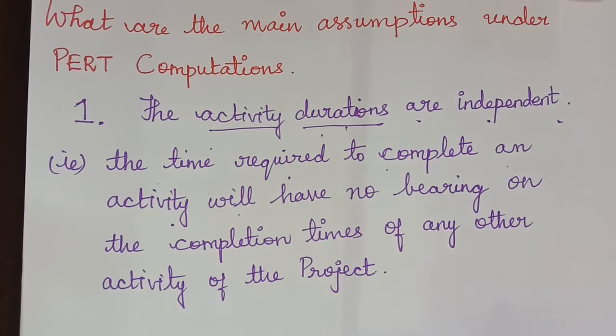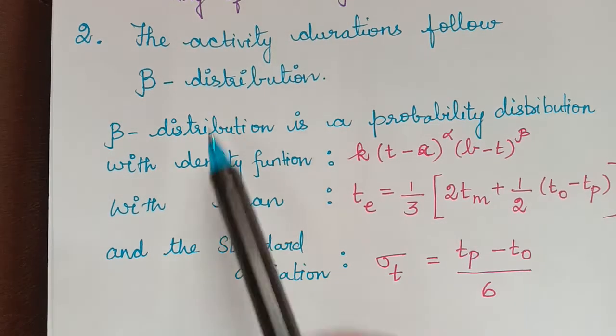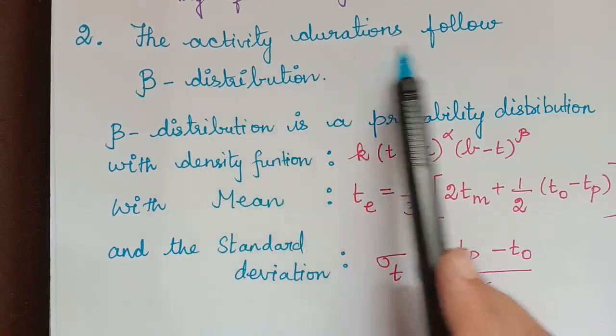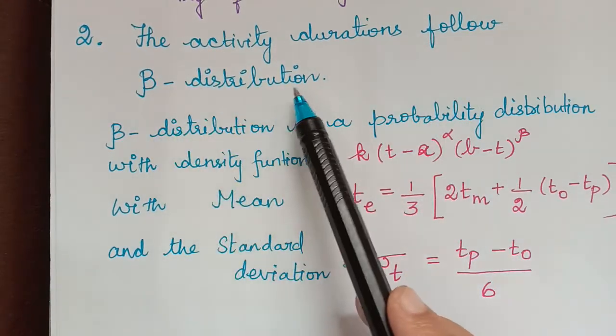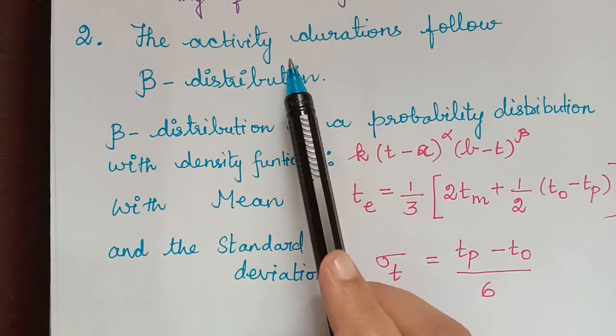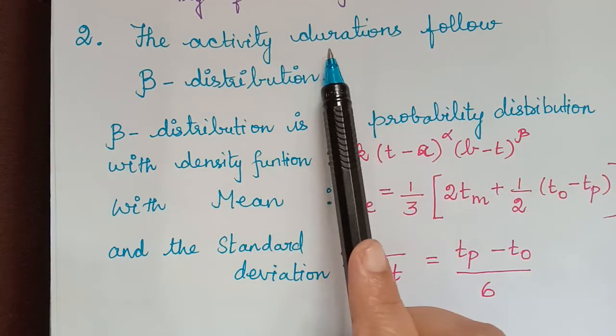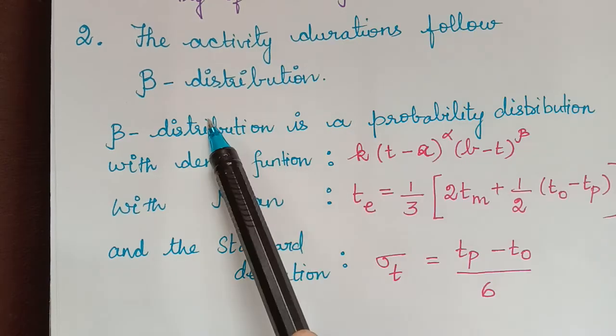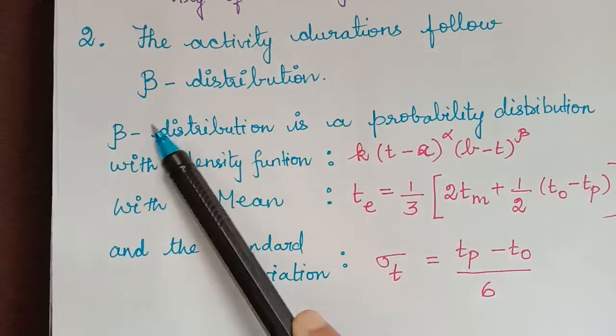The second assumption is that the activity durations follow beta distribution. We all know that in PERT analysis, the activity durations are probabilistic in nature. So now, it follows the beta distribution.